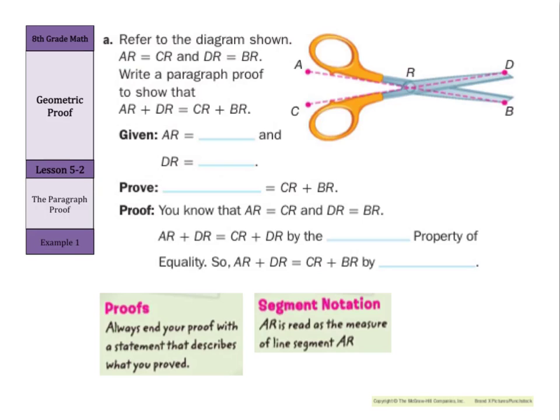Refer to the diagram shown. The measure of line segment AR equals the measure of line segment CR, and the measure of line segment DR equals the measure of line segment BR. Write a paragraph proof to show that the measure of line segment AR plus the measure of line segment DR is equal to the measure of line segment CR plus the measure of line segment BR.